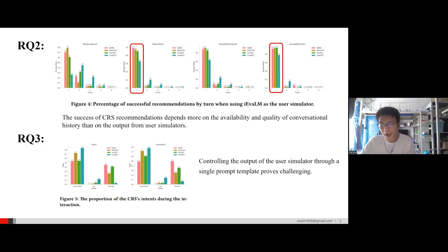our models exhibit a very high percentage of successful recommendations in the first round on both datasets when the CRS has not yet utilized the feedback information given by the user simulator. This indicates that the success of CRS recommendations depends more on the availability and quality of conversational history than on the output from the user simulator.